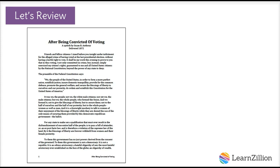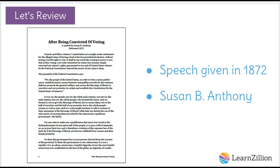Let's review. We've been reading and re-reading the speech after being convicted of voting. Remember, this speech was written and given in 1872 by Susan B. Anthony, a pioneer for women's rights and suffragist. She gave this stump speech in all 29 postal districts of Monroe County, New York, during the 1872 presidential election.